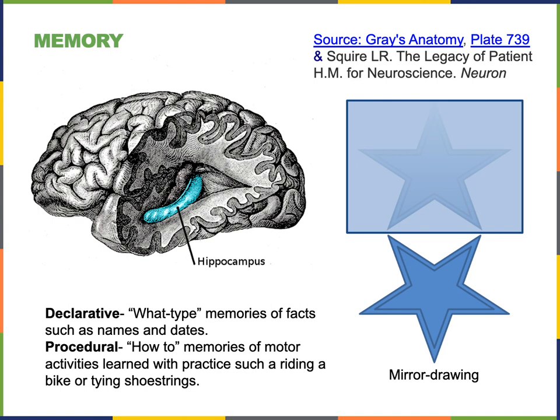Declarative memories, on the other hand, require processing in a region of the medial temporal lobe known as the hippocampus, which is an important part of the limbic system.